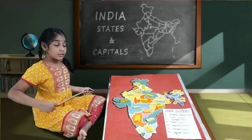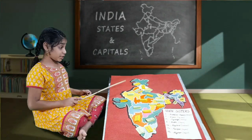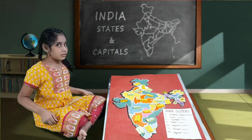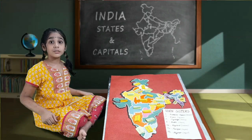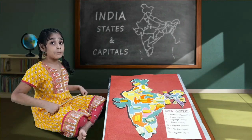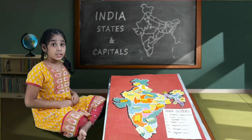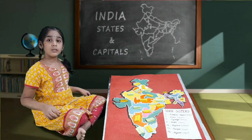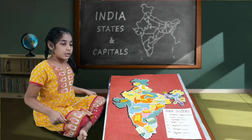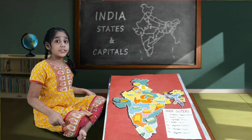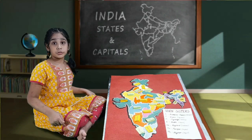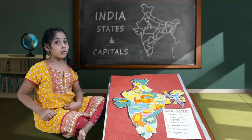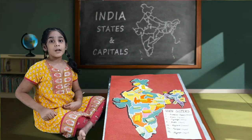Friends, till October 2019, Jammu and Kashmir was considered as a state. But after October 31st, 2019, Jammu and Kashmir became two union territories — that is Jammu and Kashmir, and Ladakh. Based on this, we can say that our India has only 28 states and 9 union territories. Okay my friends, hope this video helped you a lot. Thank you.